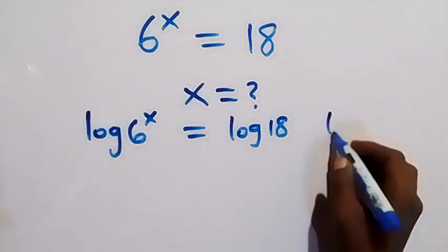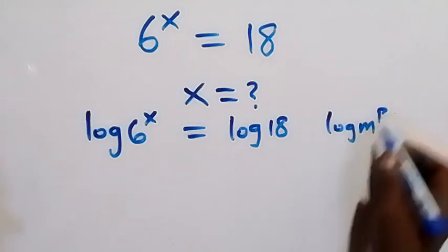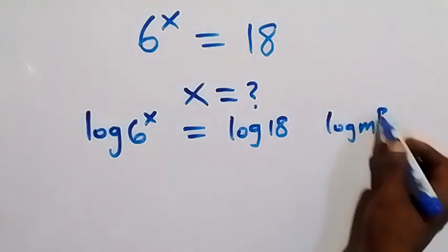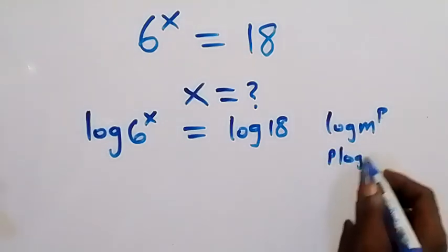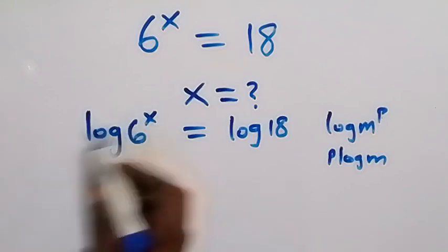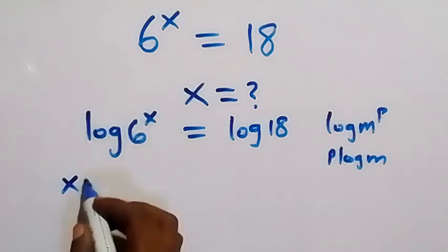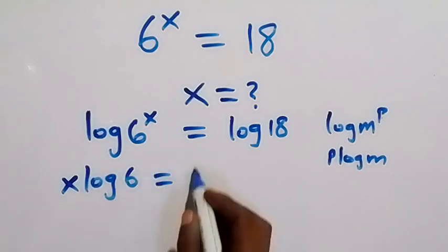Where we have log m raised to power p, from power log we can take this p to the back here. And this will be p log m. So when we apply that here, taking x here, we have x log 6 equals to log 18.